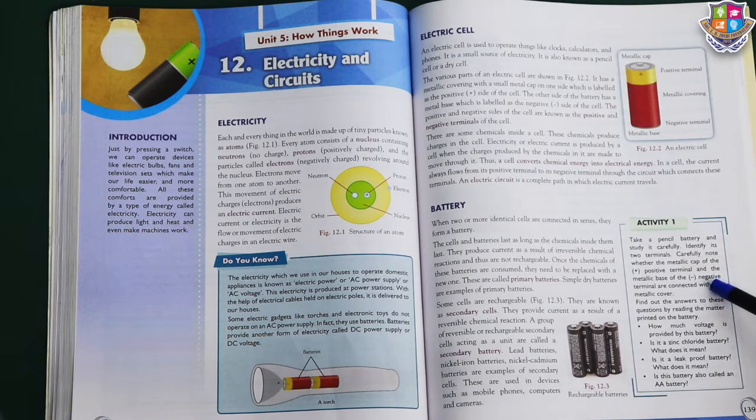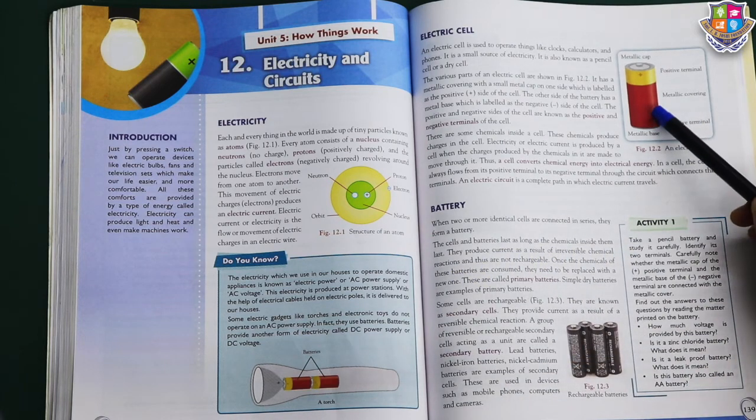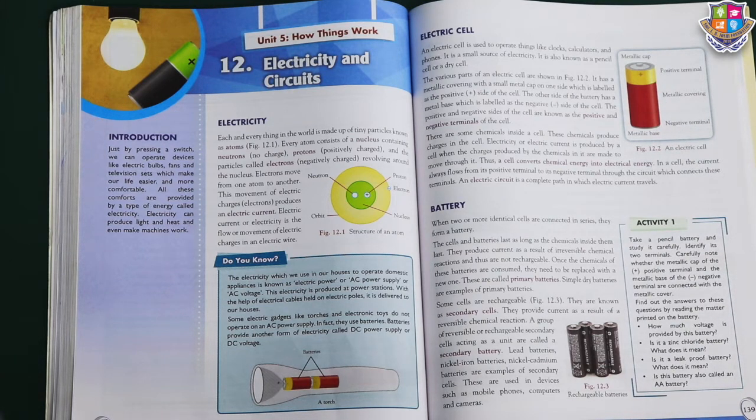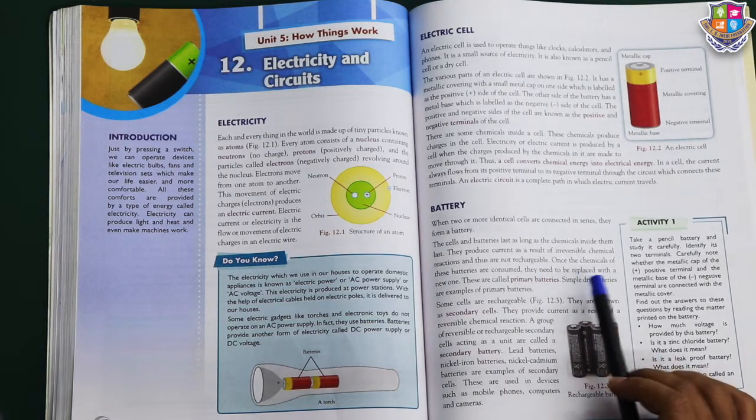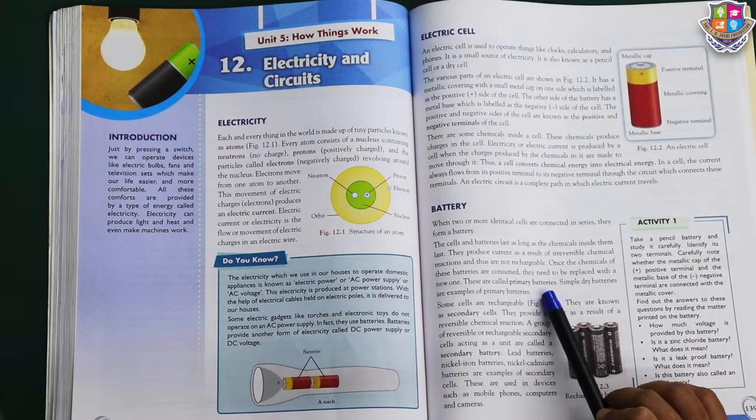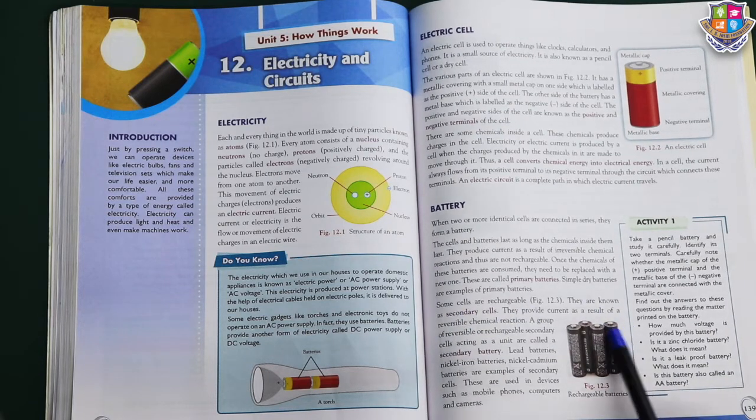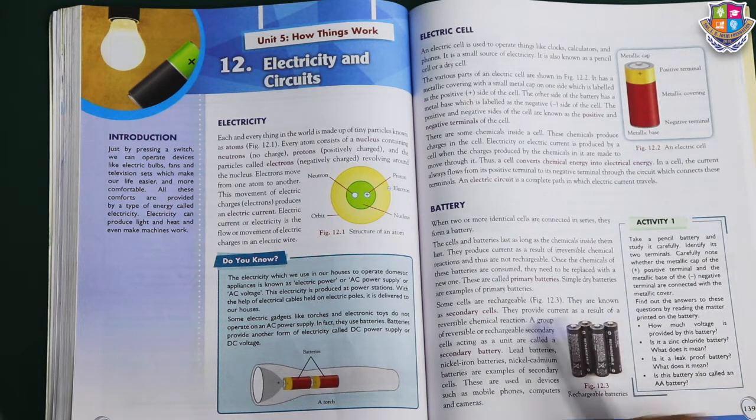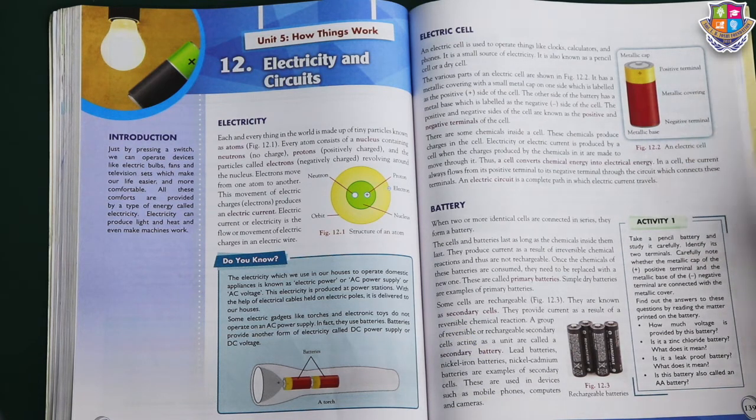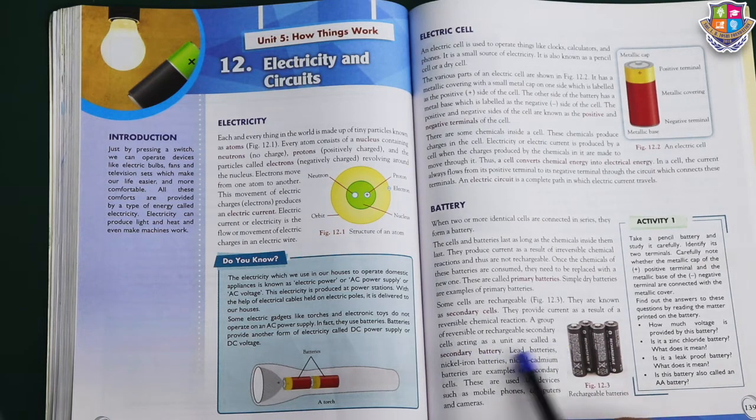The cells and batteries last as long as the chemicals inside them last. We say the cell has gone bad. That means the chemicals inside have been exhausted. But today we charge our phones repeatedly, which means they are rechargeable. Once the chemicals of these batteries are consumed, they need to be replaced with new ones. We call these primary batteries. Simple dry batteries are examples of primary batteries. Some cells are rechargeable. In our phones and cameras we recharge them, so they are known as secondary cells. They provide current as a result of reversible chemical reaction. In a simple reaction, the cell finishes. But in reversible, it continues. A group of reversible or rechargeable secondary cells acting as a unit are called secondary batteries.